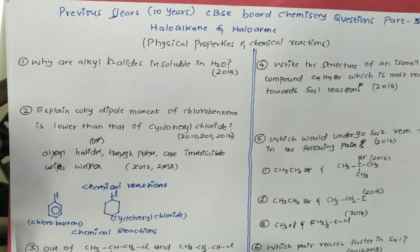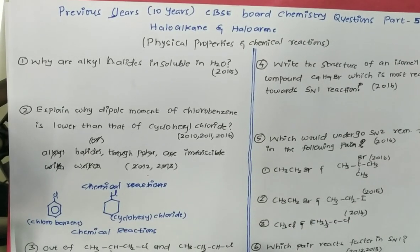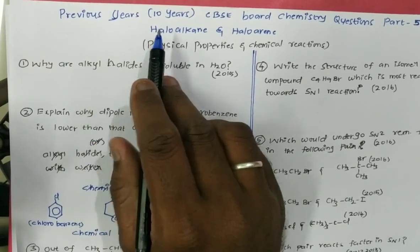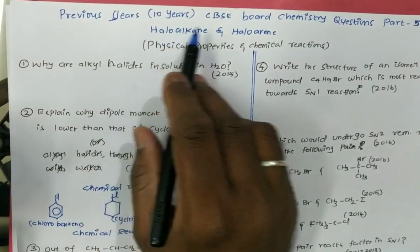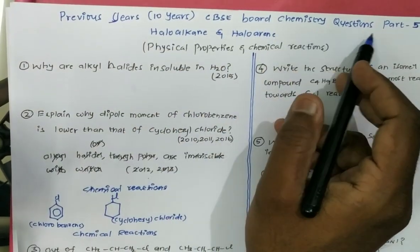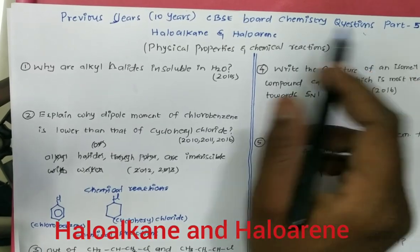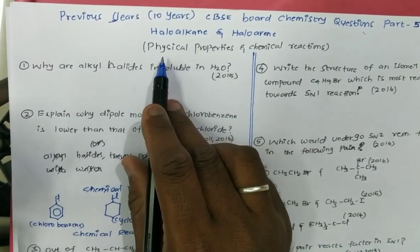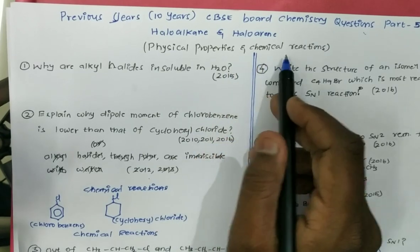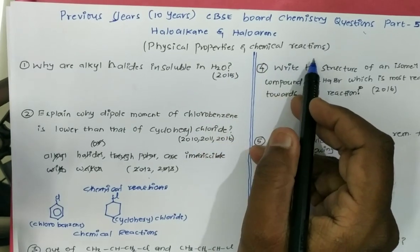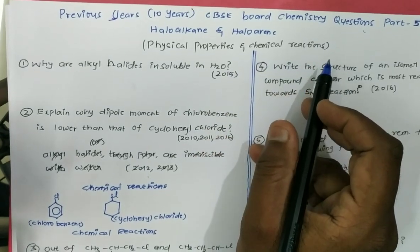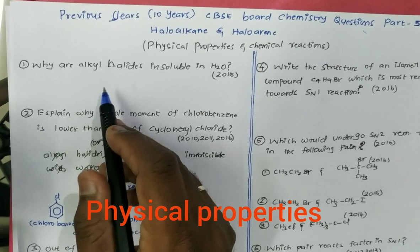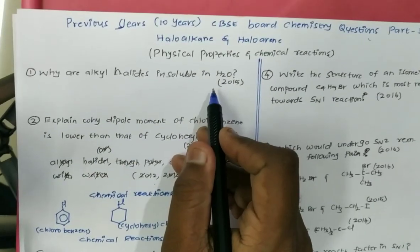Welcome to our channel, dear students. Today we are going to discuss previous year — that is last 10 years CVSE Board chemistry questions, part 5, in the haloalkyl and arene chapter, in which we are going to discuss physical properties and chemical reaction based questions.